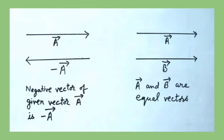Equal vectors: two vectors having the same magnitude as well as direction are known as equal vectors. Here you can see vectors A and B have the same magnitude and direction. For being equal, two vectors do not require the same initial point. Two equal and parallel lines can represent equal vectors. If one vector is shifted parallel to itself, it coincides exactly with the other, showing that they are equal vectors.